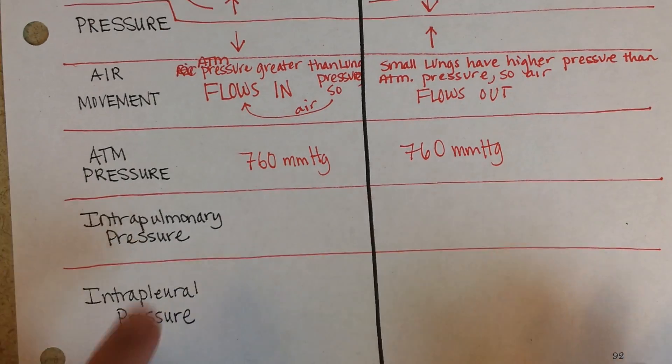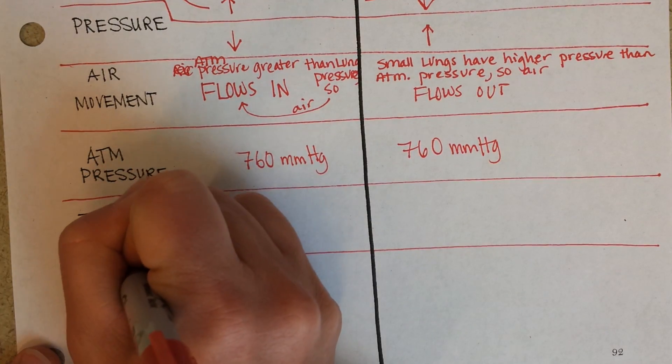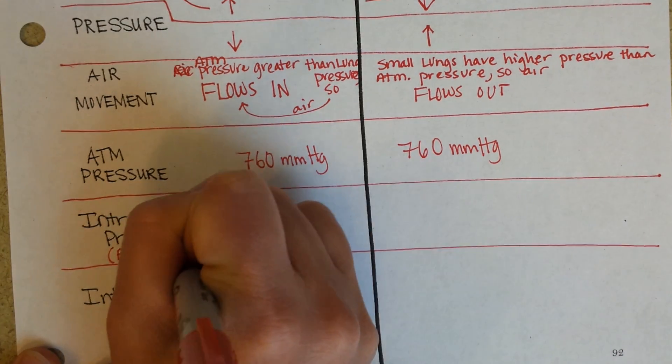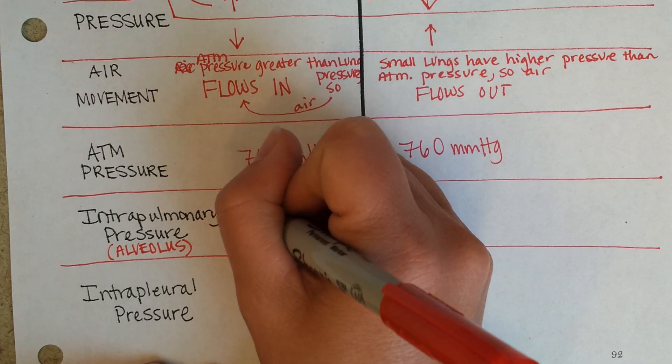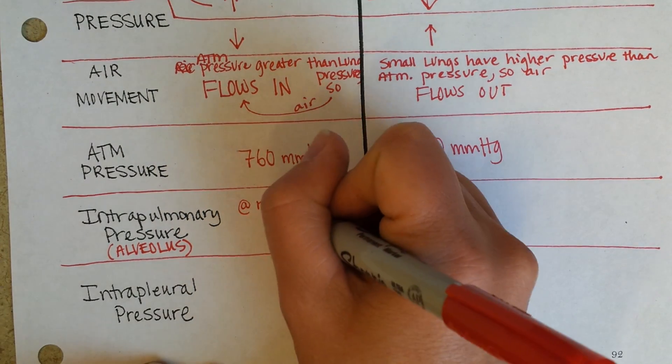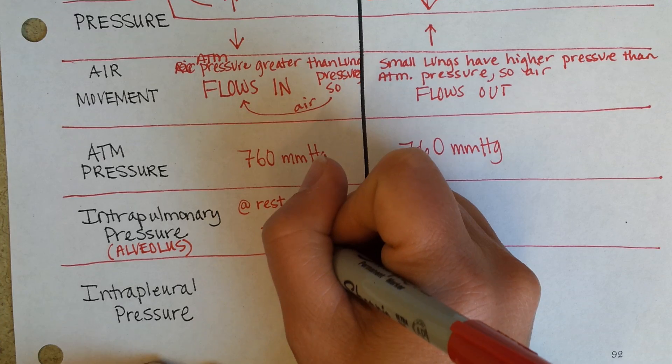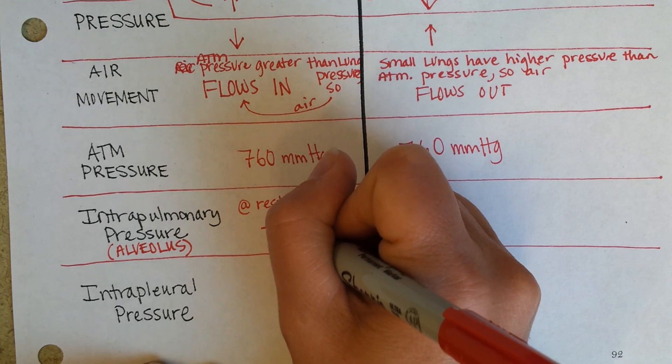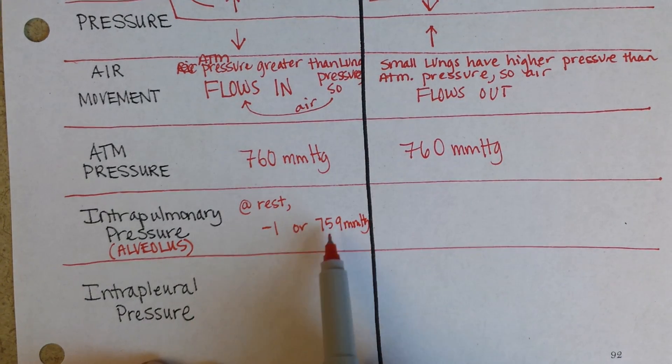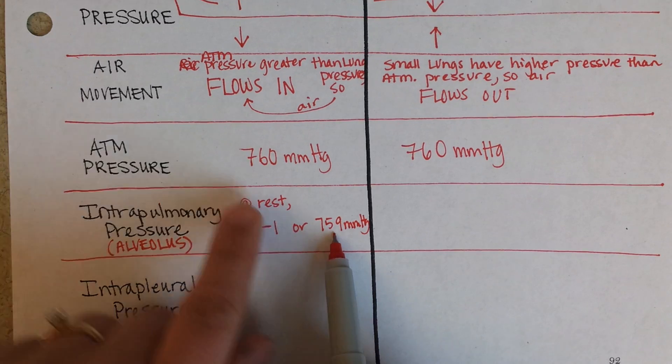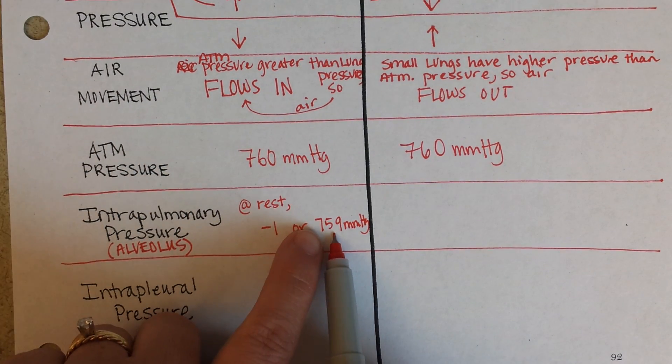Intrapulmonary pressure is the pressure in the alveolus. And when you breathe in and you make the volume in all of those alveoli get bigger, then the pressure goes down in those alveoli. And it actually gets to, at rest, if you're just sitting there restfully, might go to 759 millimeters of mercury.